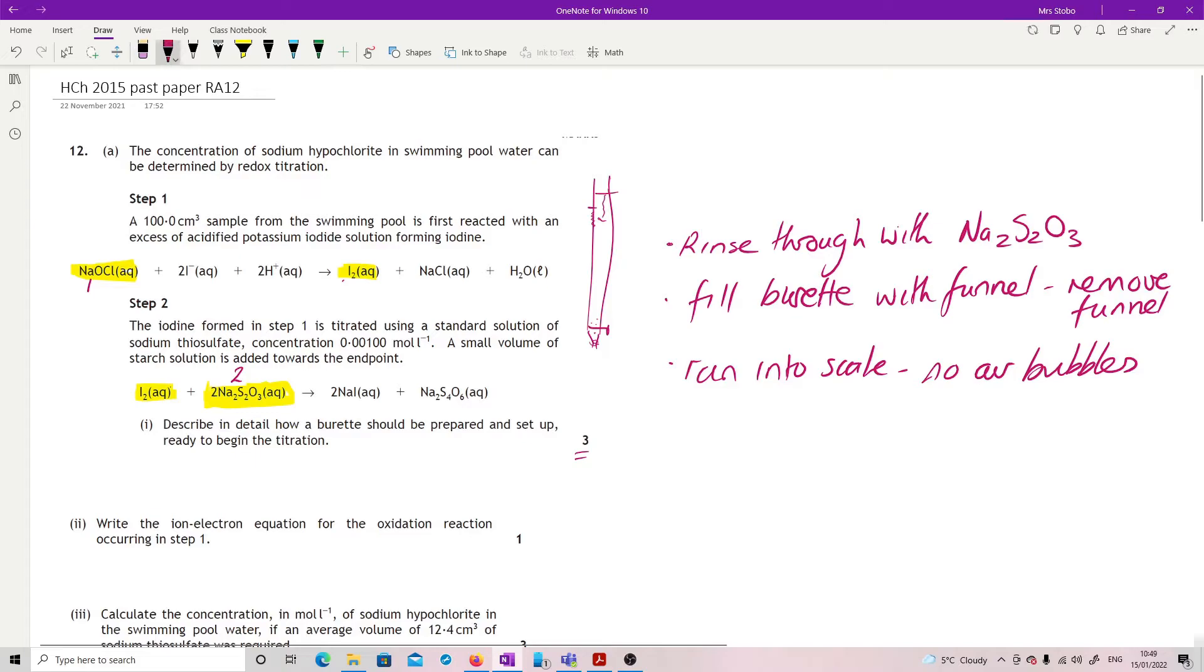Write the ion electron equation for the oxidation reaction occurring in step one. Oxidation is loss. I need something which is either losing negative charge or going from neutral to positive. What we have here is a very clear something losing a negative charge. I would then frankly just go straight to data book if I wasn't sure and just write it from that.